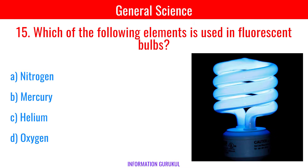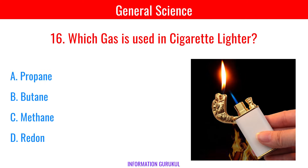Which of the following elements is used in floss and bulbs? Mercury. Which gas is used in cigarette lighters? Butane.